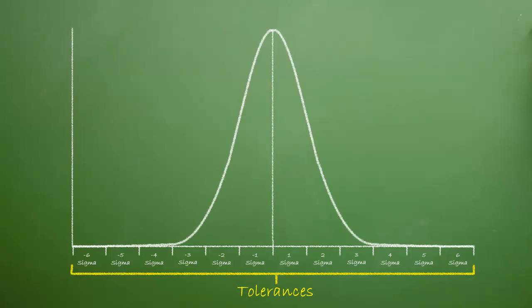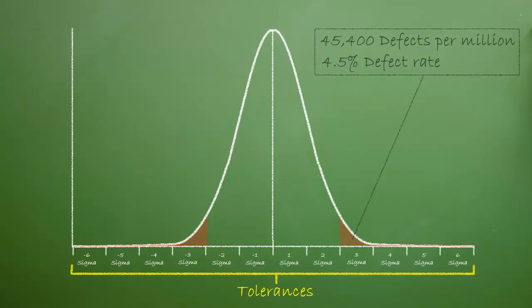They then assumed normal Gaussian distribution. Let's assume that they manufactured a million items. At two Sigmas, it turns out that 45,400 defects would occur. That means that they'd have a defect 4.5% of the time.